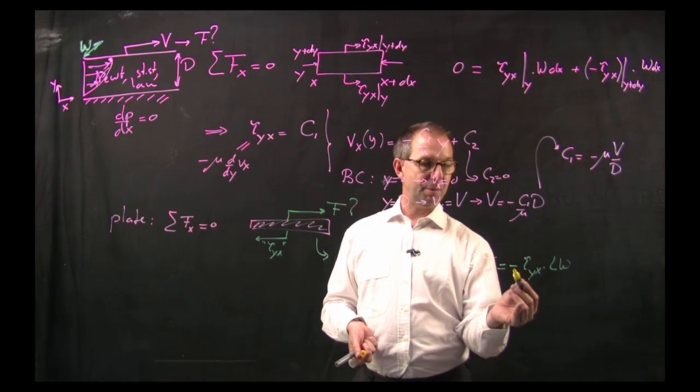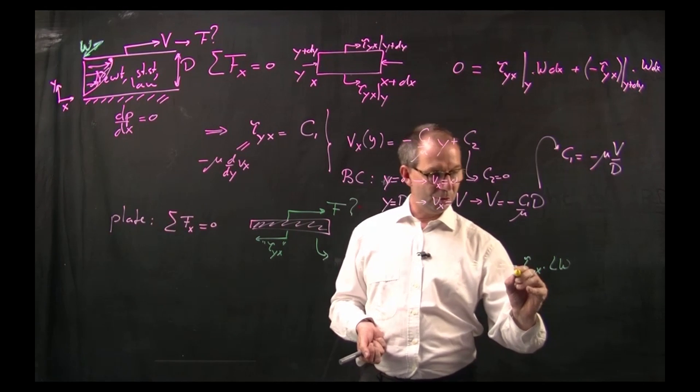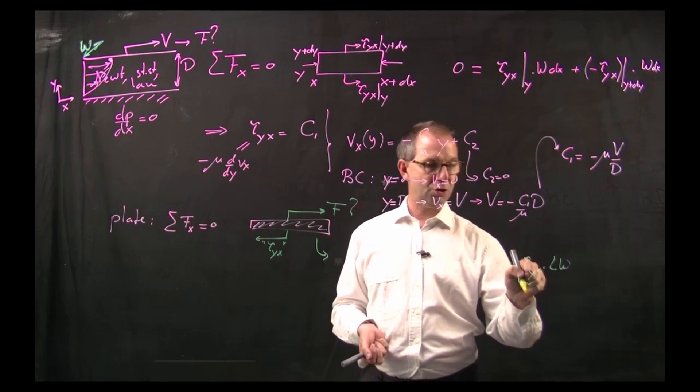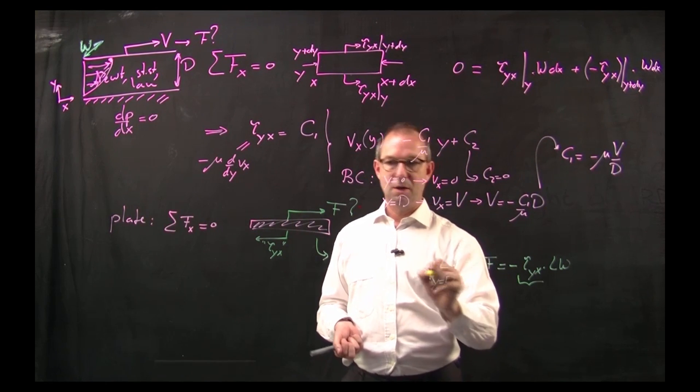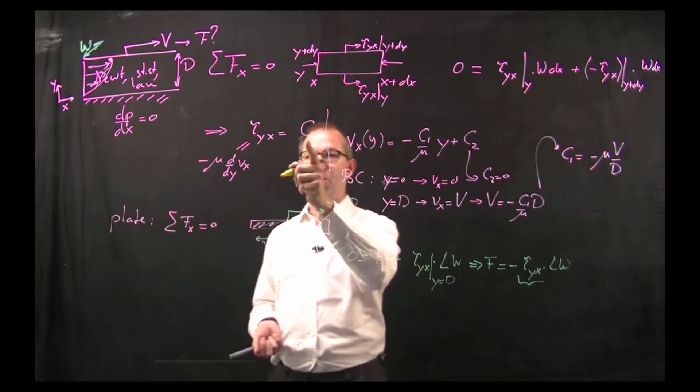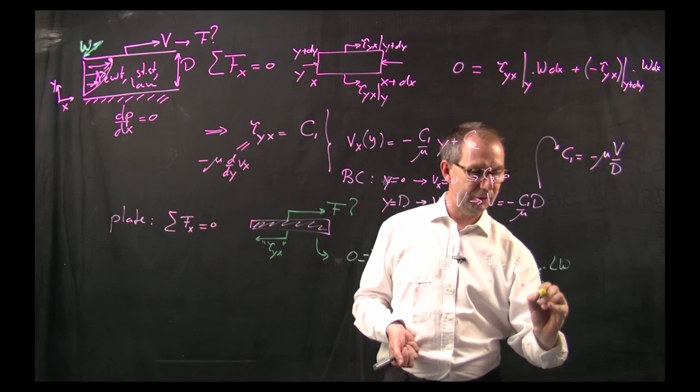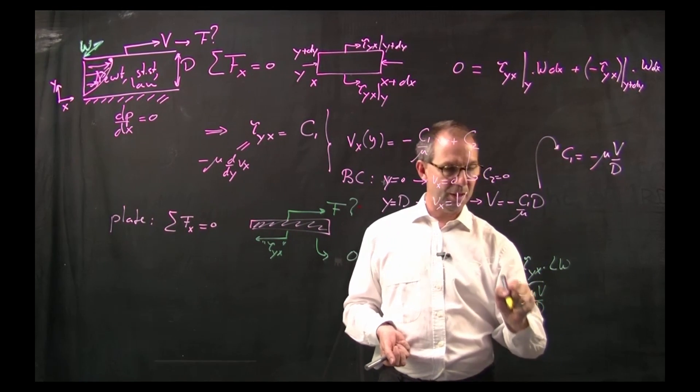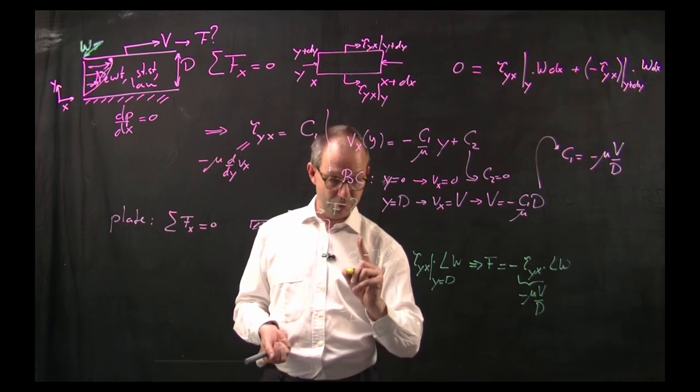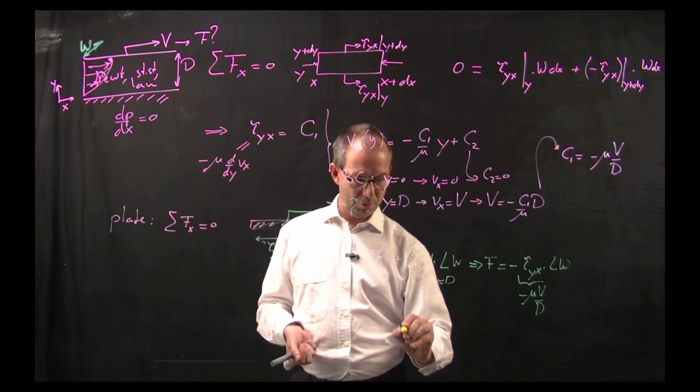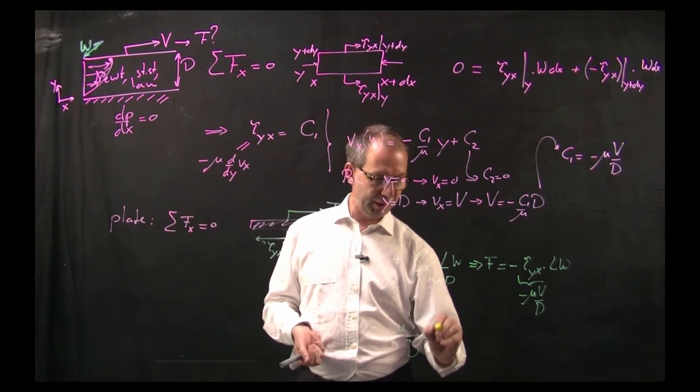Now this minus sign, does that bother me? No, not at all. Because I still need to fill in what is tau yx at position y equals d. Well I don't need to mark that because it's a constant everywhere. It's the c1 and I have that c1 which is minus mu v over d. This minus sign and that minus sign take care of each other. So the force that you need to exert equals mu v over d times the area of the plate which makes sense.